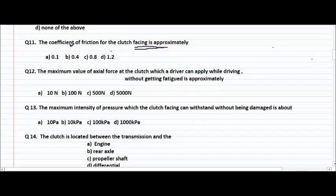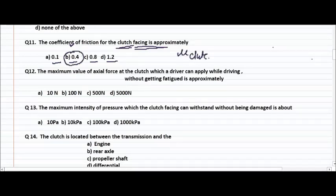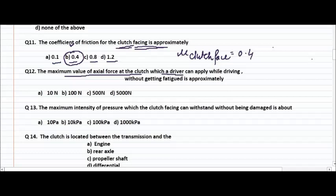Coefficient of friction for the clutch facing is approximately 0.1, 0.4, 0.8, or 1.2? The right answer is 0.4 — the value of mu for clutch face is equal to 0.4. The maximum value of axial force the driver can apply while driving without getting fatigued is approximately 100 Newton. This is the normal force a human being can apply without getting fatigued.